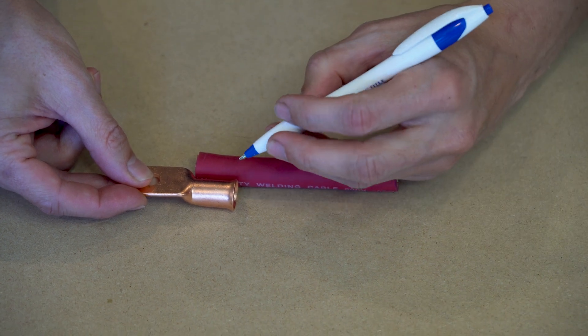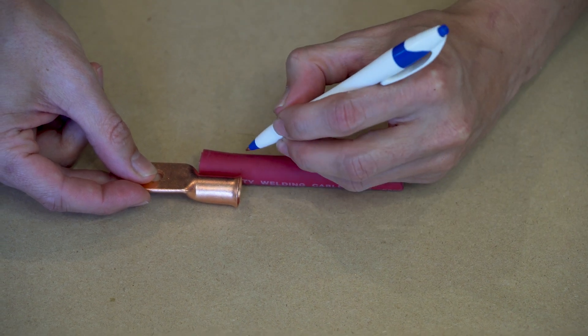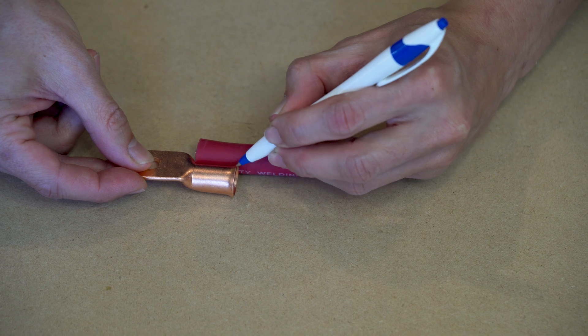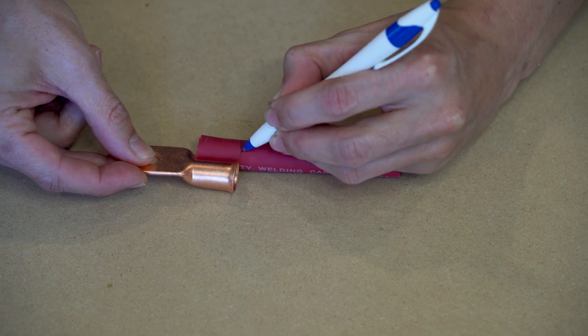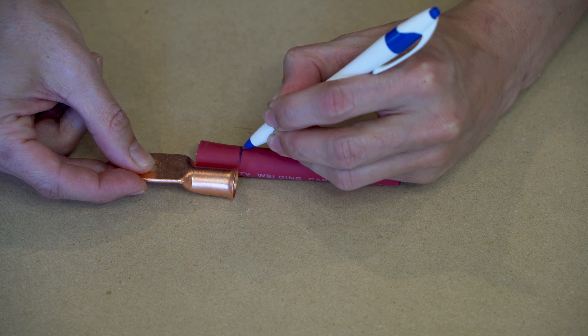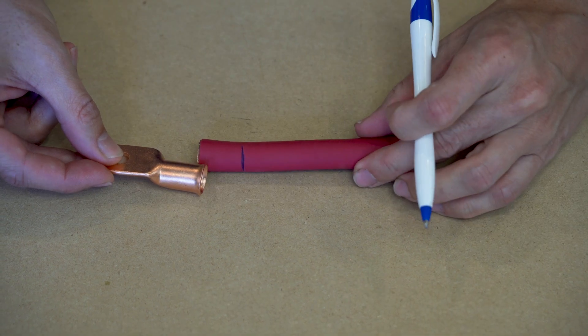Then, with our pen, we mark out our cut line on the insulation jacket at the end of the lug here. And that's all we're looking for.